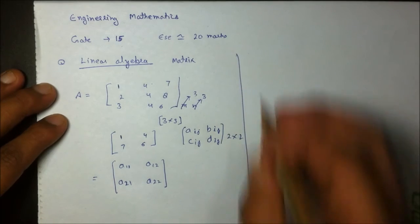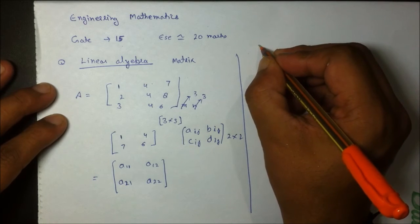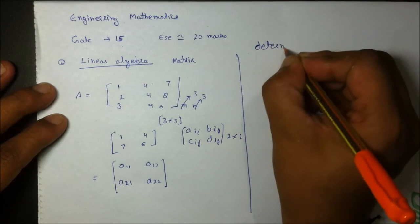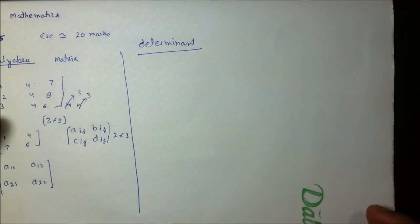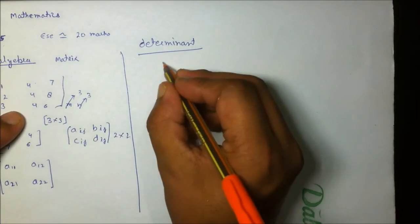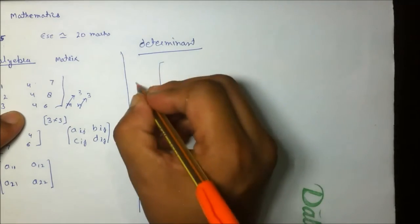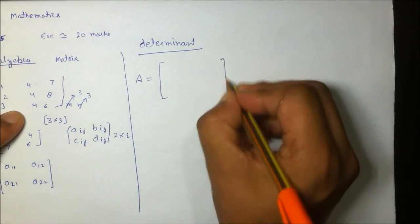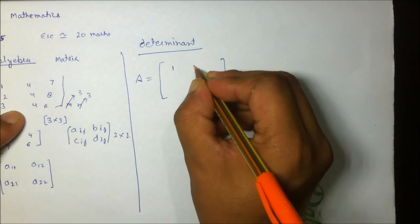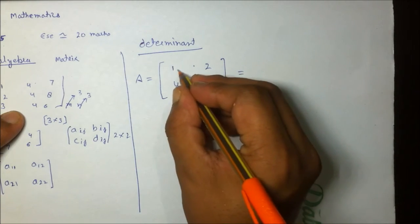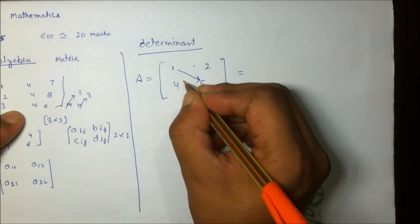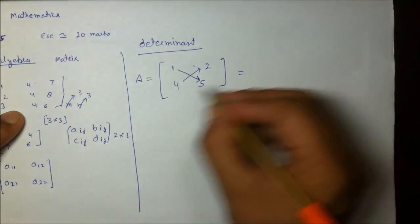In matrix, we have the first term known as determinant. What we understand about determinant is that it is the internal product of the matrix. Suppose we have a matrix with elements 1, 2, 4, and 5. The determinant of this matrix will be the product of the diagonal elements with a summation of the opposite diagonal elements.